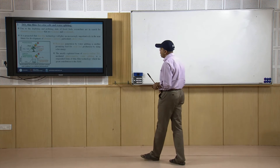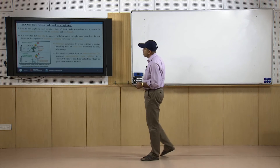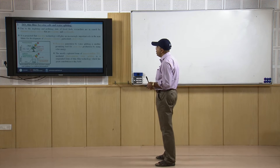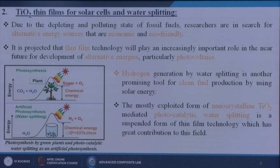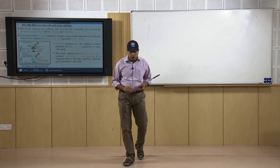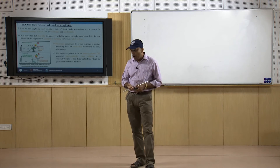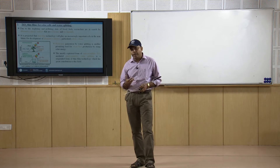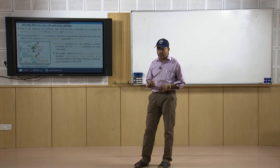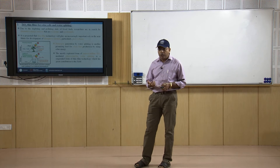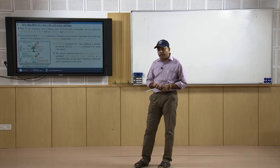Next is TiO2 thin films for solar cells and water splitting. Due to the depleting and polluting state of fossil fuels, researchers are searching for alternative energy sources that are economic and eco-friendly. Thin film technology is projected to play an increasingly important role in developing alternative energies, particularly photovoltaics. A particular form of TiO2 can be used for photovoltaic operations in solar cells, generating electricity directly from sunlight without any external energy sources.